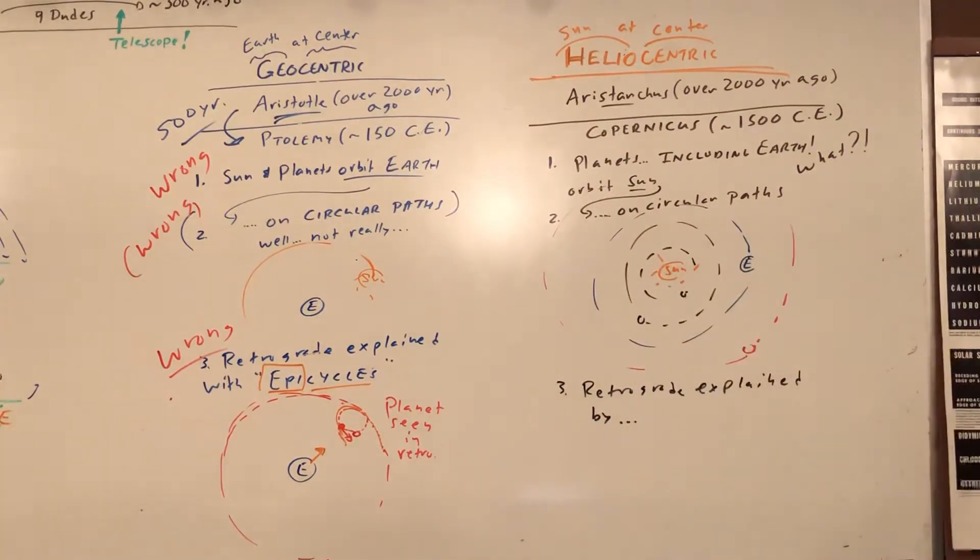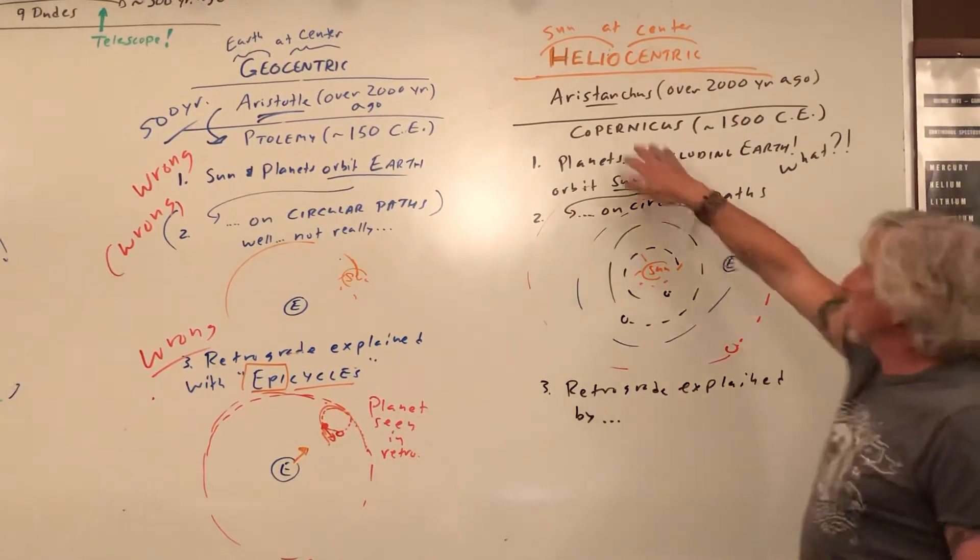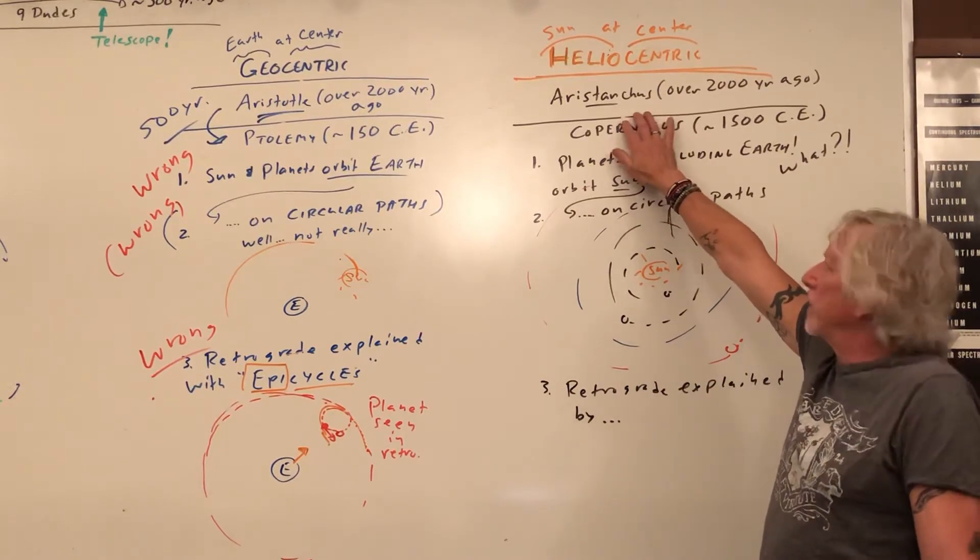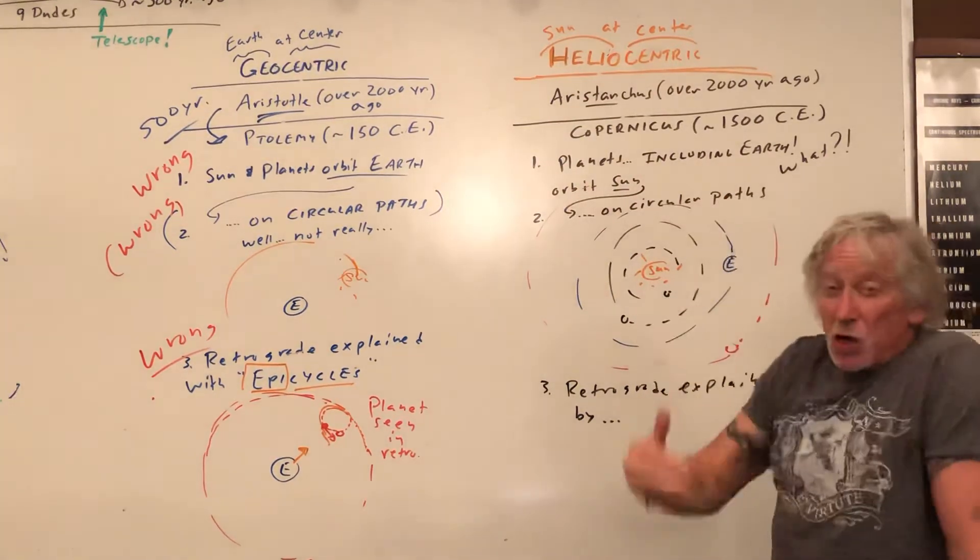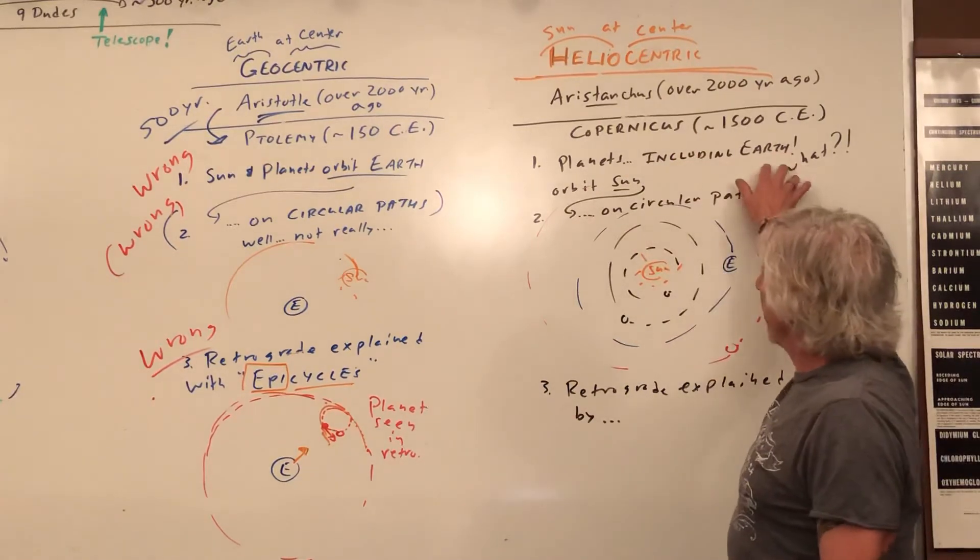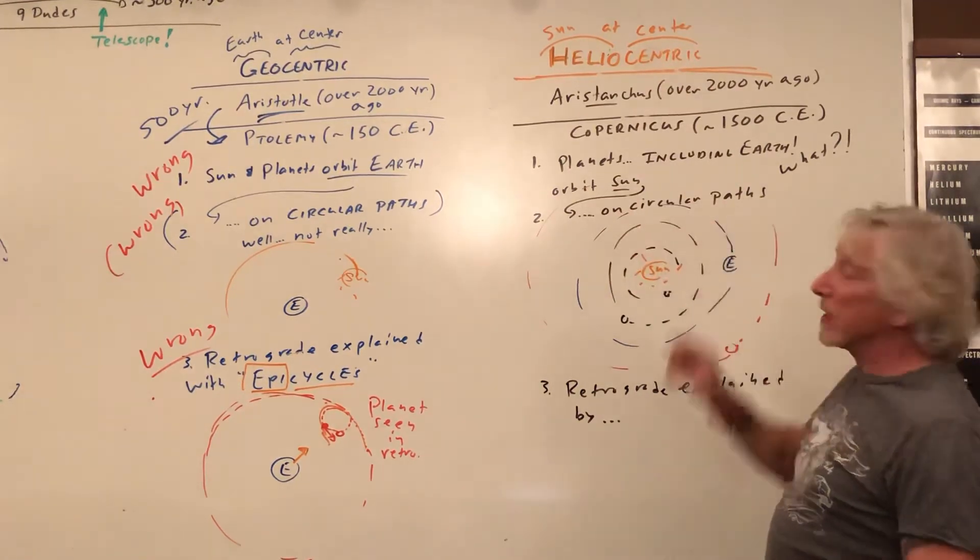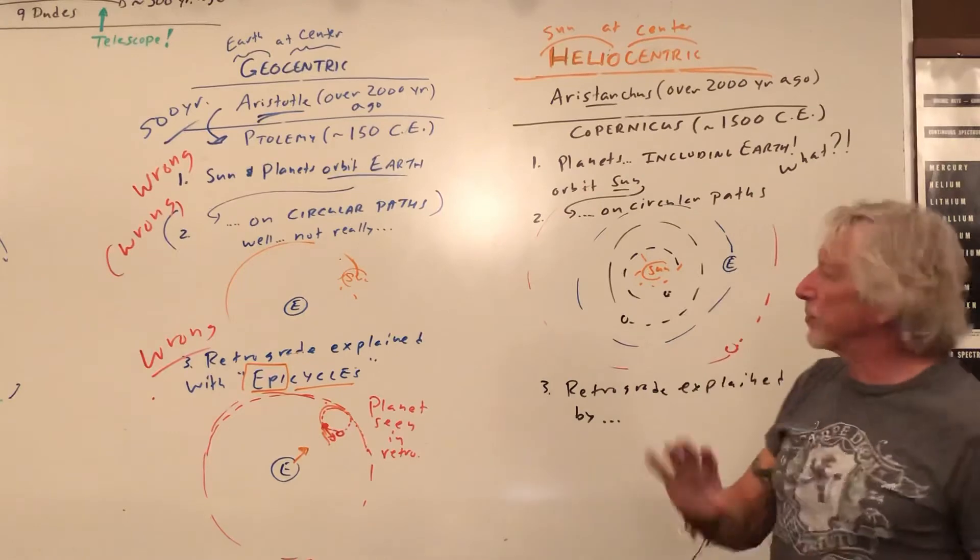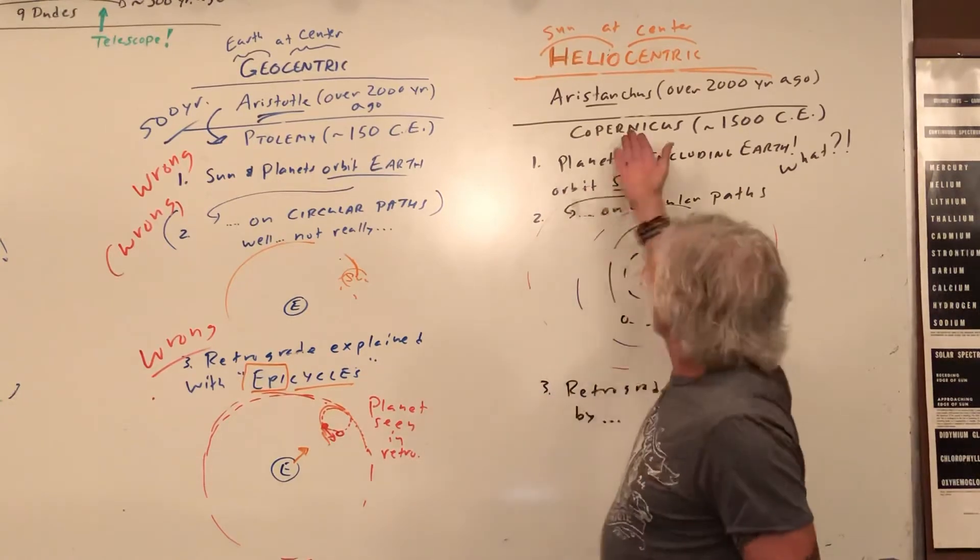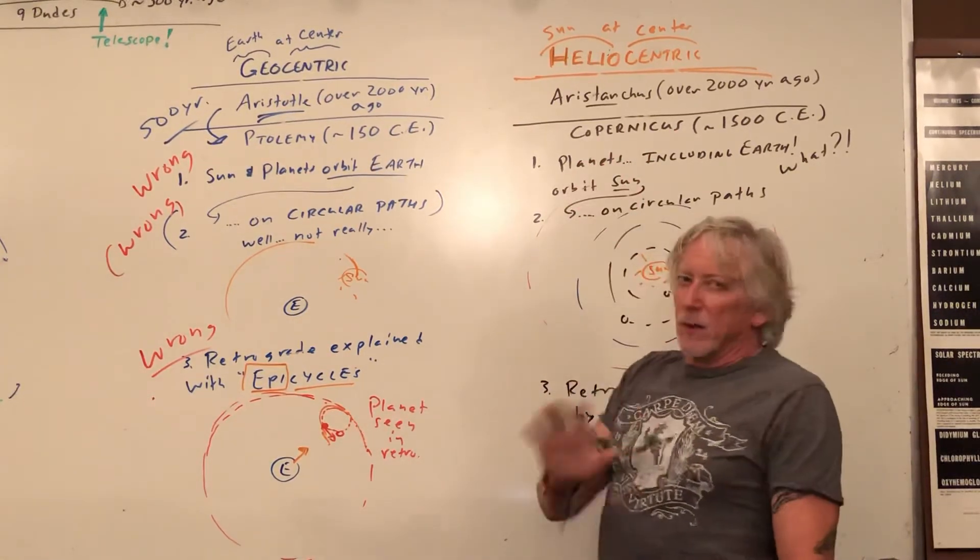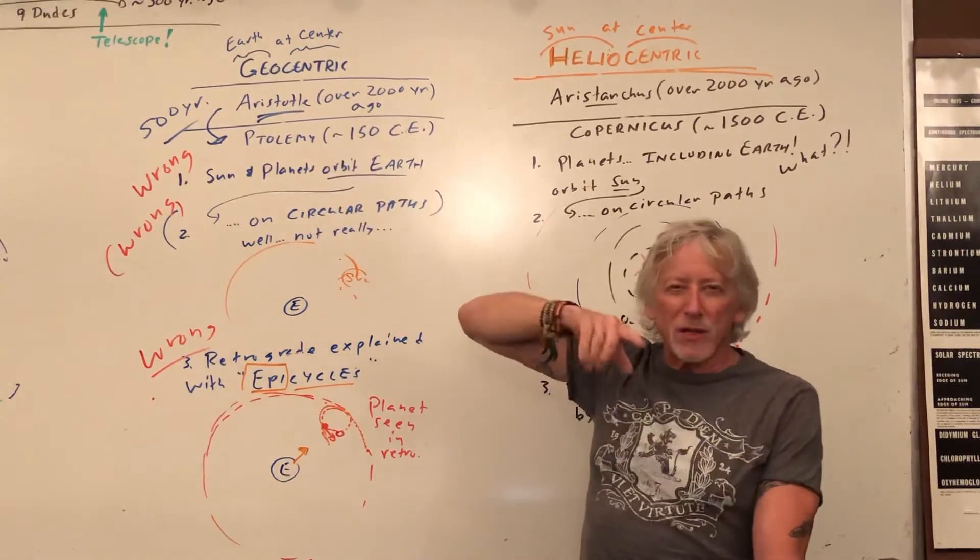We come over here to the heliocentric view. Aristarchus said everything's going around the sun. He said planets, including Earth - Earth is moving! And it's orbiting the sun - heliocentric, sun at center, on circular paths. Copernicus didn't like the way Ptolemy shifted the center. He actually wanted to go back to Aristotle's perfection.